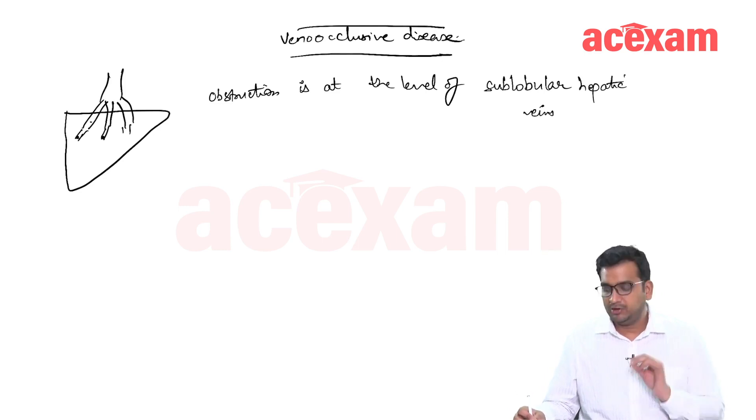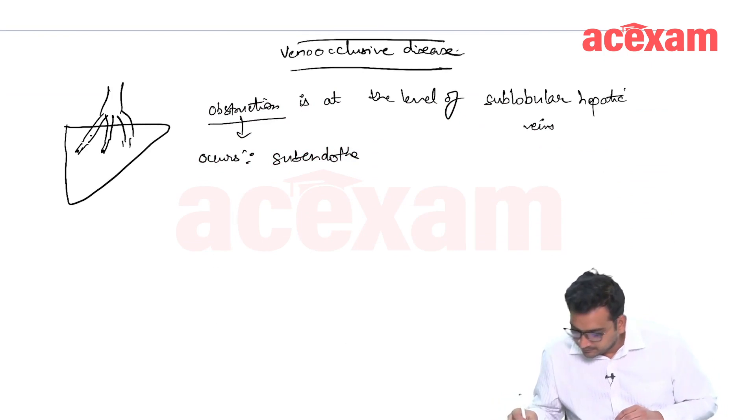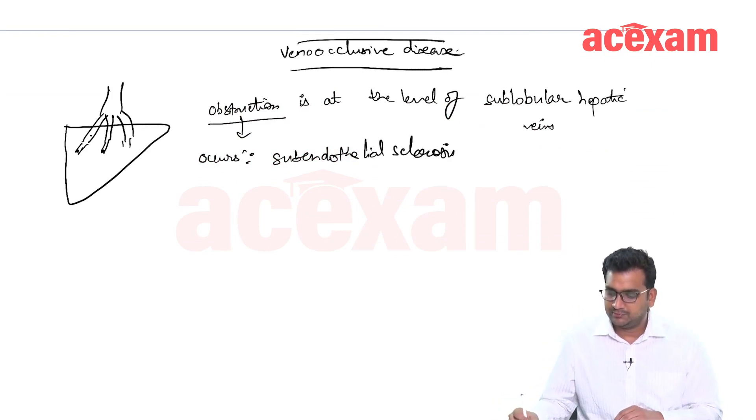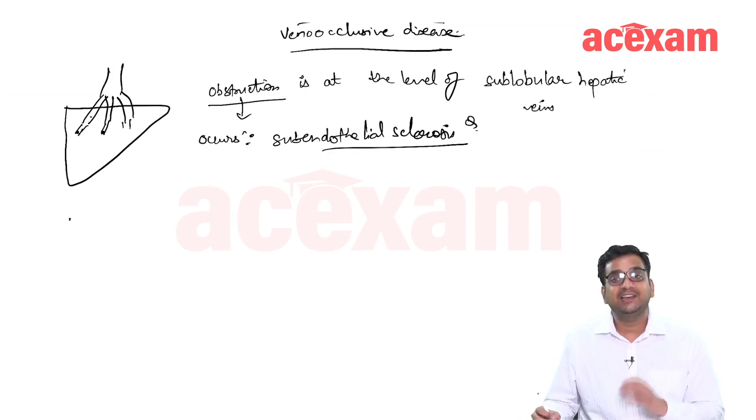The obstruction occurs because of sub-endothelial sclerosis. The clinical features are also like that of Budd-Chiari Syndrome because there is obstruction to the hepatic venous outflow. It is a type of hepatic venous outflow obstruction.